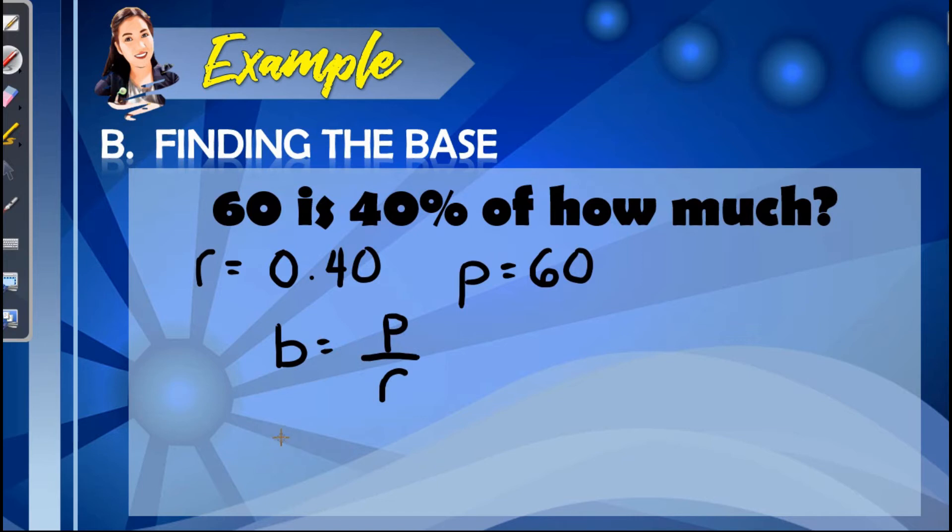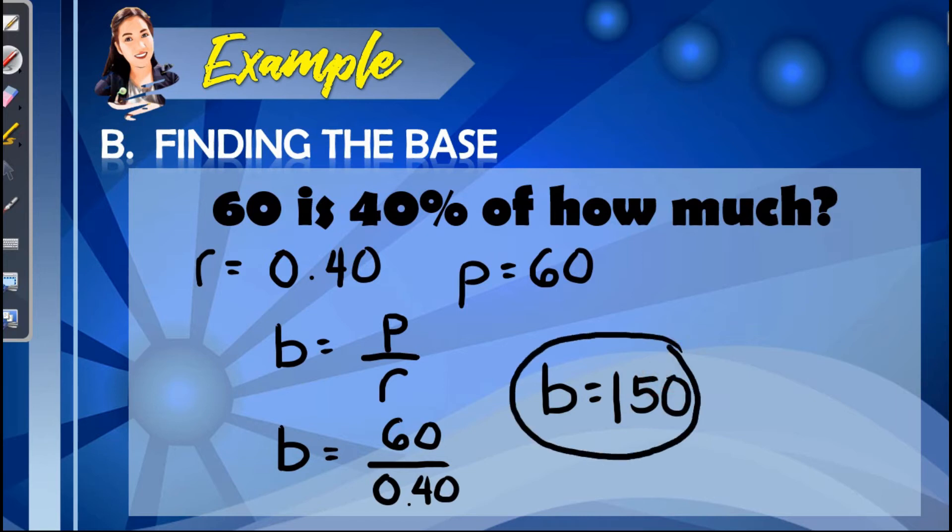Now, let us do substitution, so we have the B is equal to 60 over the rate, which is 0.40. Dividing these two values, we will be able to have the value of the base, which is 150. Which means 60 is 40% of 150.